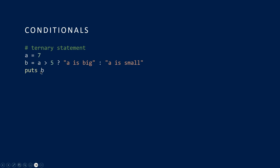And the lovely ternary statement. Here I'm setting A to 7. On the strength of what A is — whether it's greater than 5 — it's either going to say 'big' or 'small.' When I output B, 7 is greater than 5, so it'll be 'A is big.' You can probably notice — and I encourage you to experiment — you can possibly nest ternary statements, though they come with a warning, so just be careful.